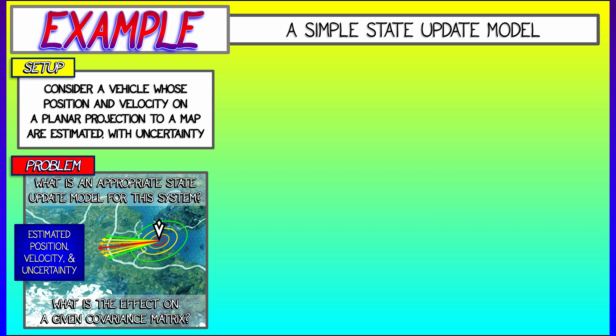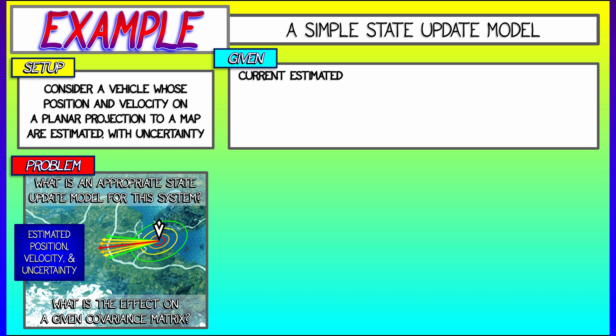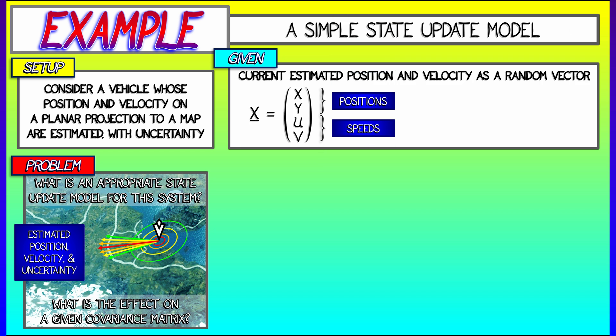So what I'm going to do is take this data and pack all of these random variables into one random vector. Let's call this x. And let's say its components are the x and y position, and then the horizontal and vertical components of velocity. That is my x and y speeds.